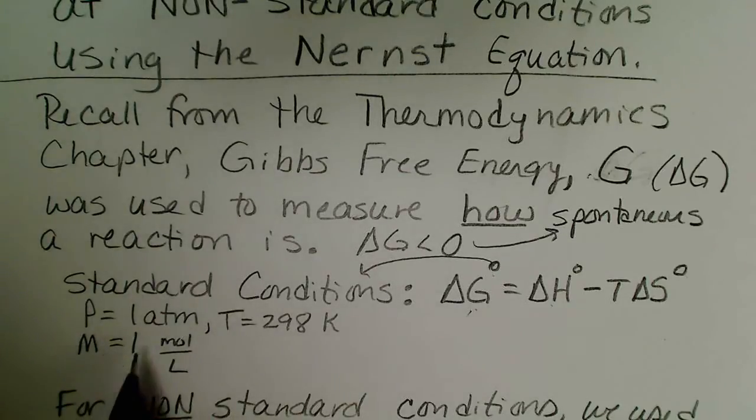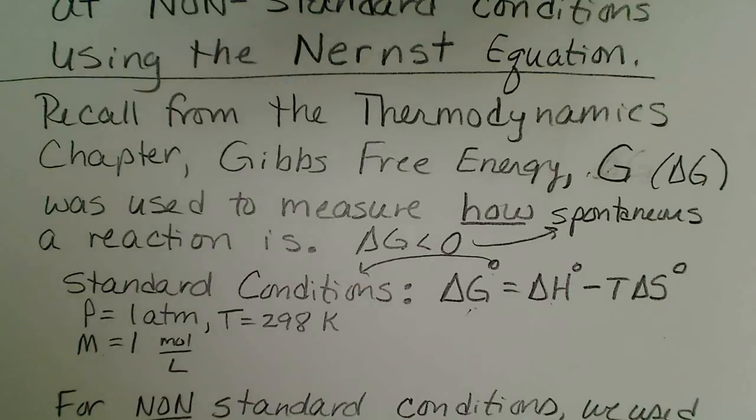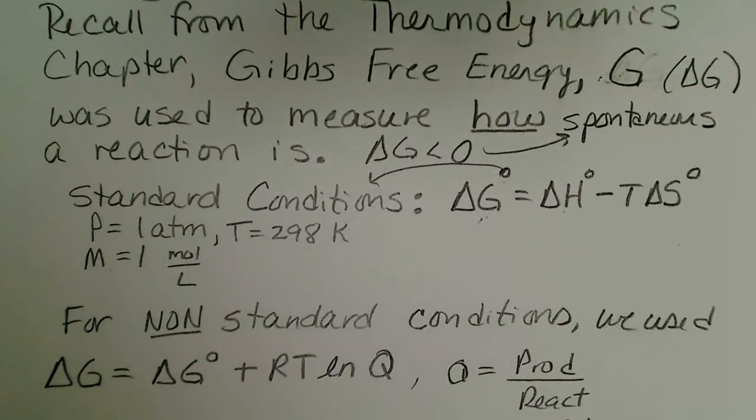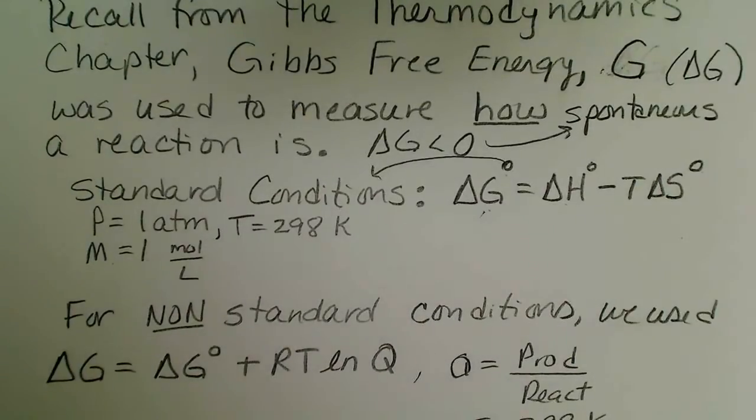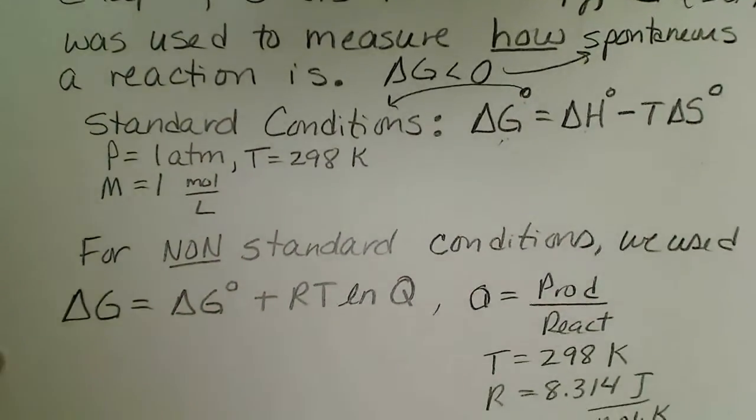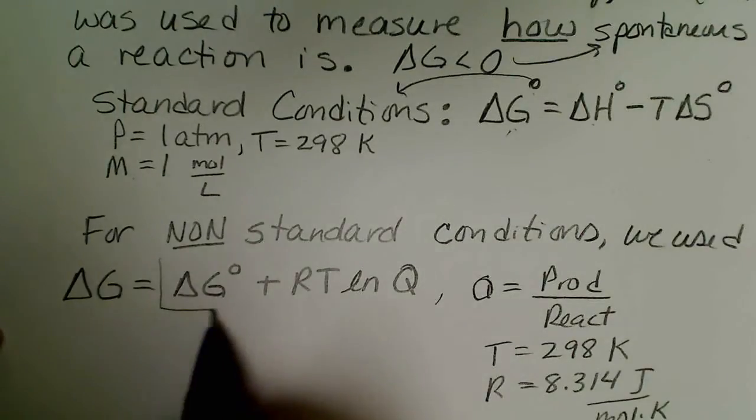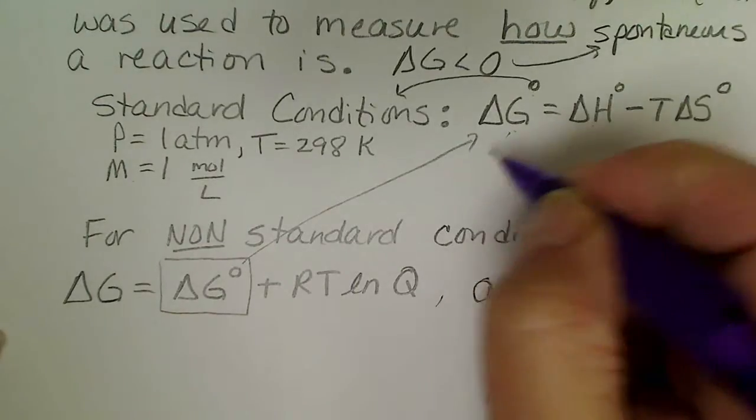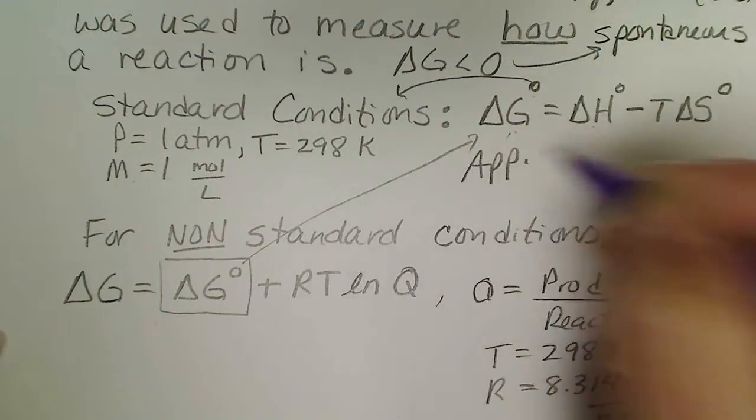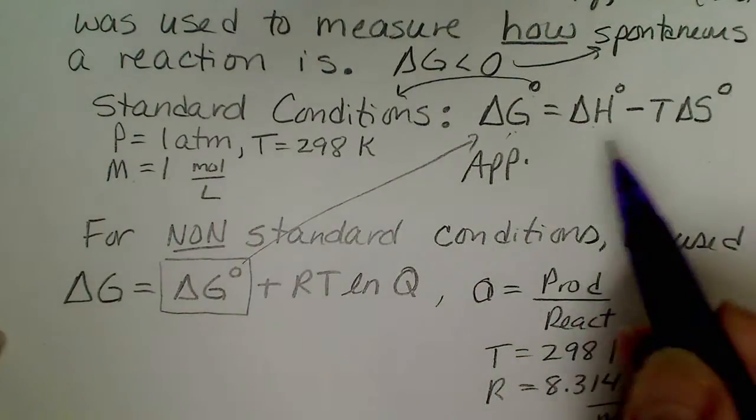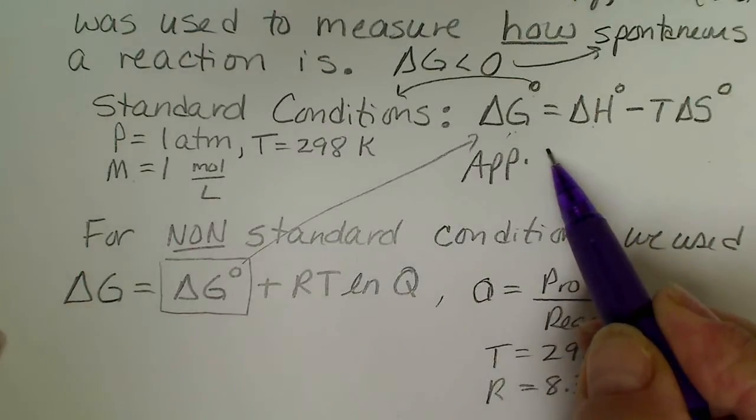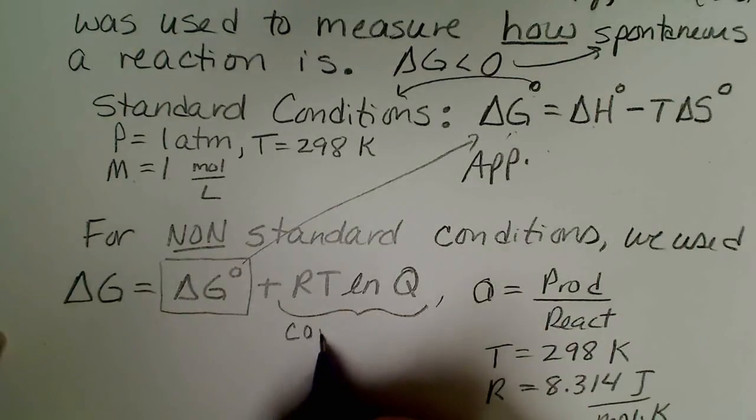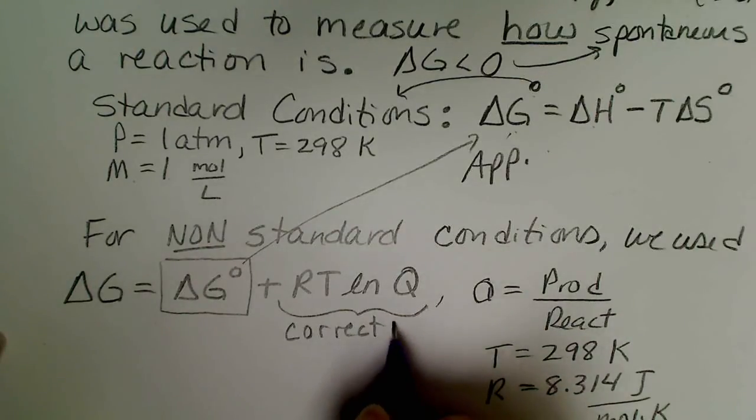Our pressures would be one atmosphere, if we have concentrations those units would be one molar, and the temperature would be 298 degrees Kelvin. For non-standard conditions when you are calculating the change in Gibbs free energy we use the tabulated value, so this would be the same value we find using the appendix values and thermodynamics values given in the table.